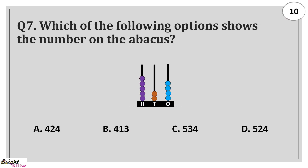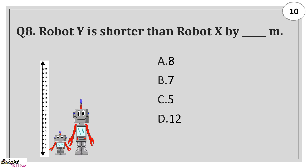Which of the following options shows the number on the abacus? Answer: 5.24. Robert Y is shorter than Robert X by Dash meters. Answer: 13 minus 5 equals 8.